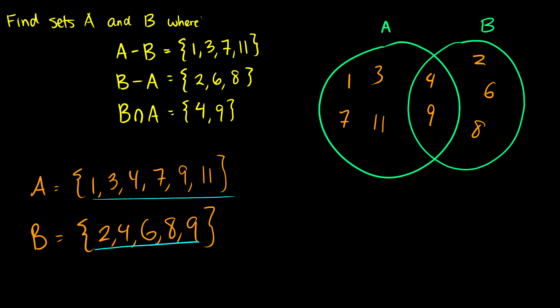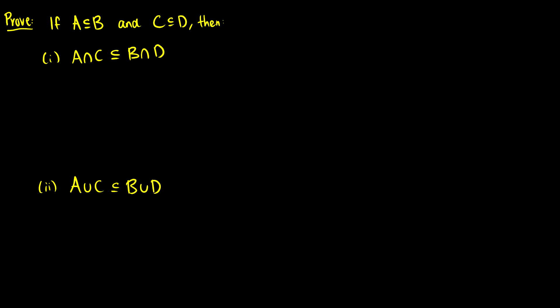If you weren't given the intersection, things might get a little bit trickier, because you don't know which numbers could be in both. But for this question, we're given it so it's not too much of a problem. Okay, the second question. Third question.